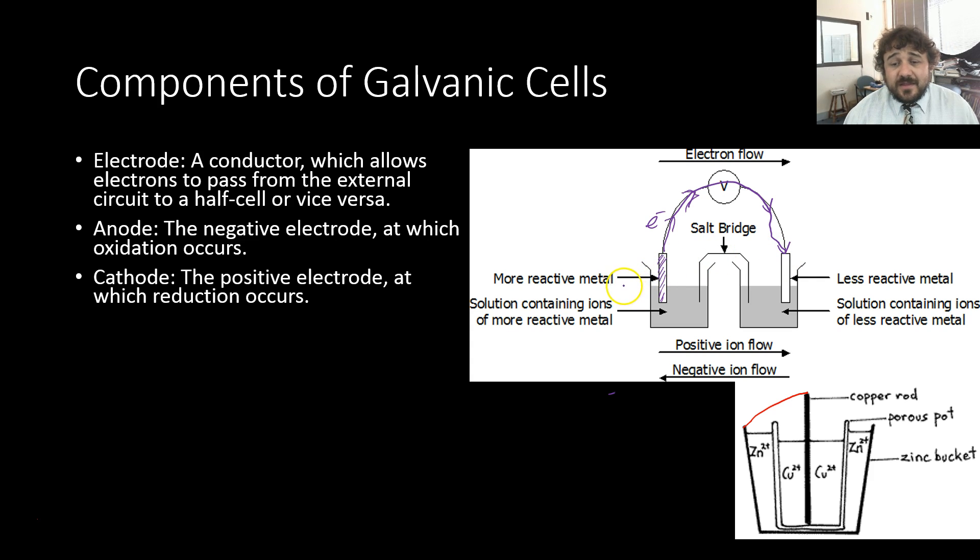Our more reactive metal, that is our anode. Our less reactive metal, that is our cathode. This is where reduction occurs, and this is where oxidation occurs.